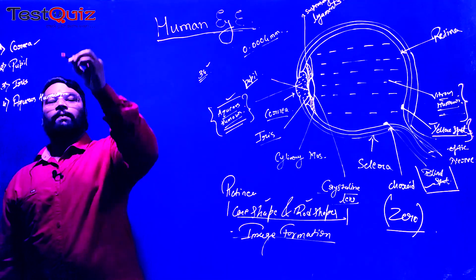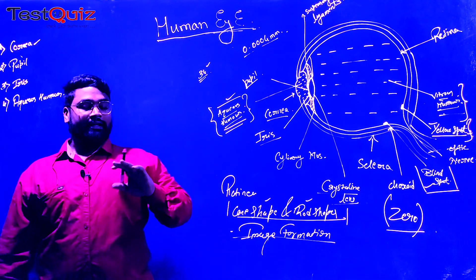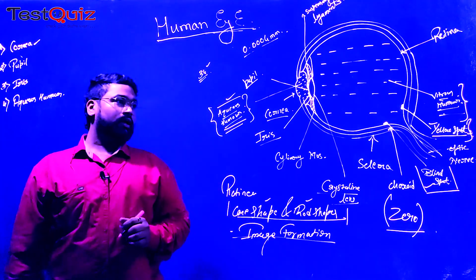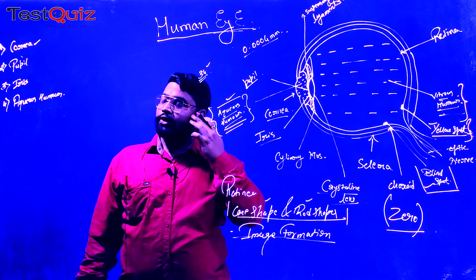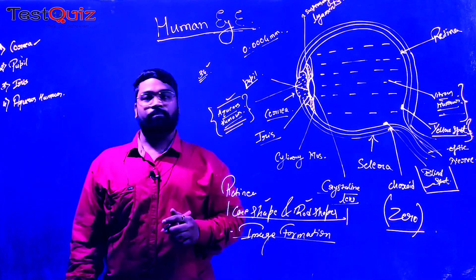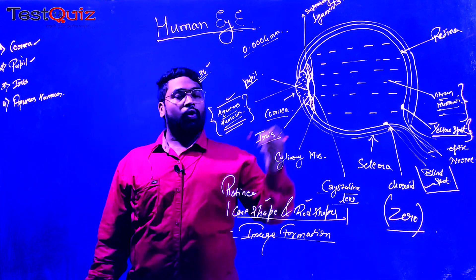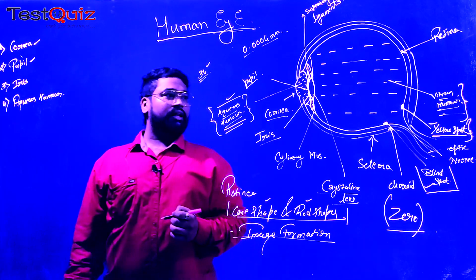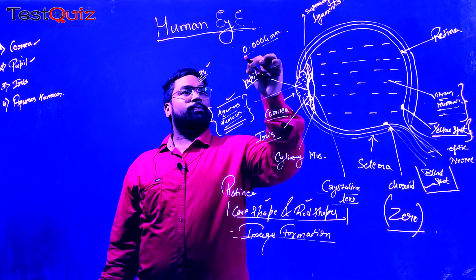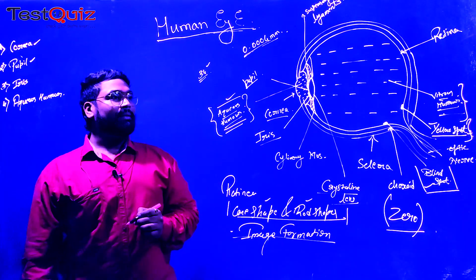The first part is called the cornea. The cornea is a burst-outward structure which gives a completely outward look to the human eye, which is transparent. When you close your eye and touch it, you can feel the burst-outward-like structure. The second one is the pupil — a small hole in between the eye where the ray of light enters, with a diameter of 0.0004 mm.